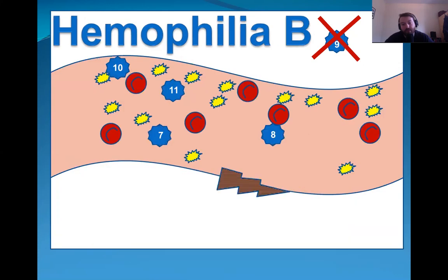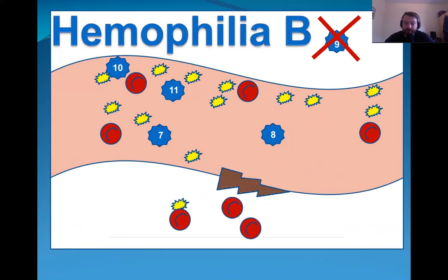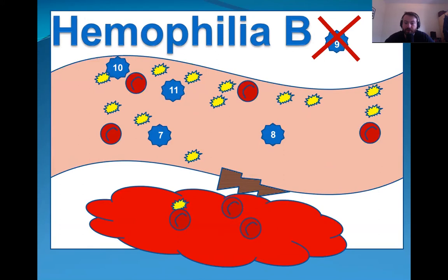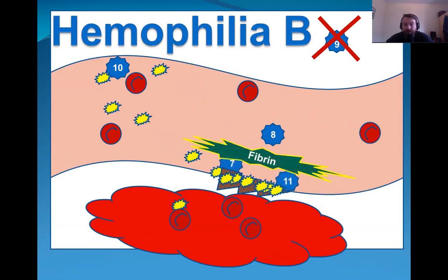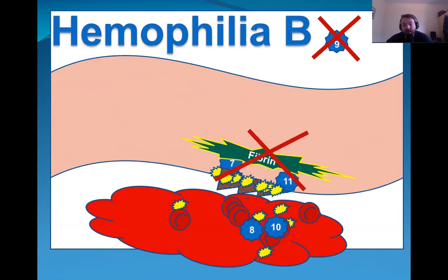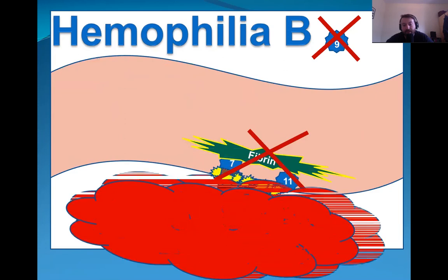Here we illustrate the same thing in the hemophilia B patient. The missing factor protein is factor 9. After injury occurs, the patient bleeds, the platelets move in for primary coagulation, factor 7 and 11 migrate. However, factor 8 does not migrate either because factor 9 is required to activate factor 8. Therefore, there is no fibrin produced and the patient will keep bleeding.